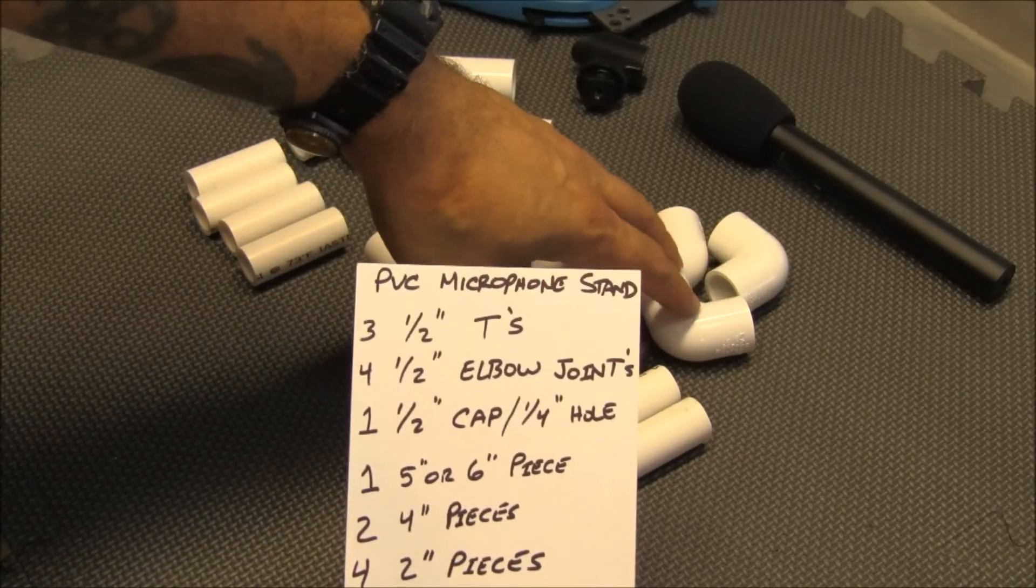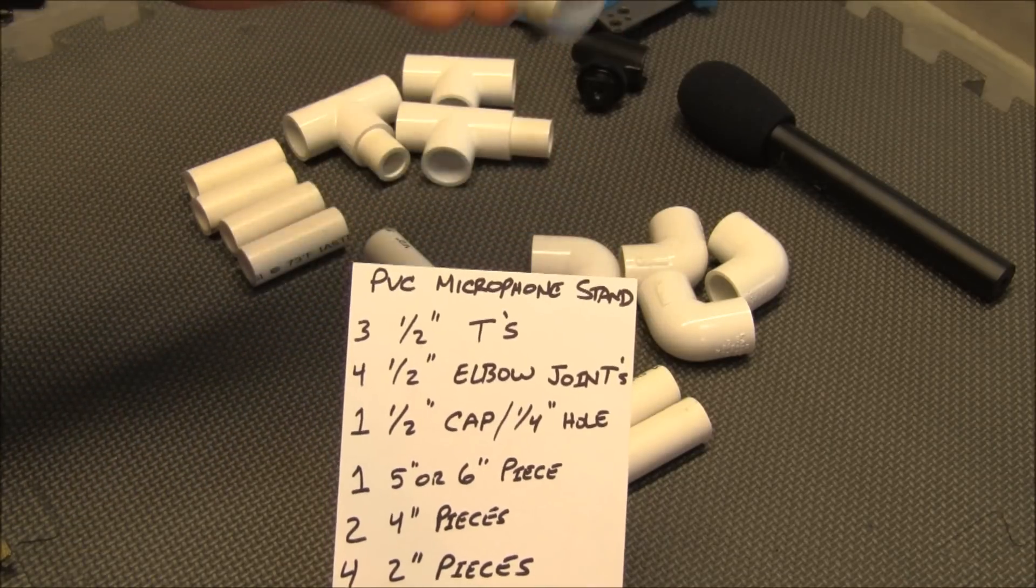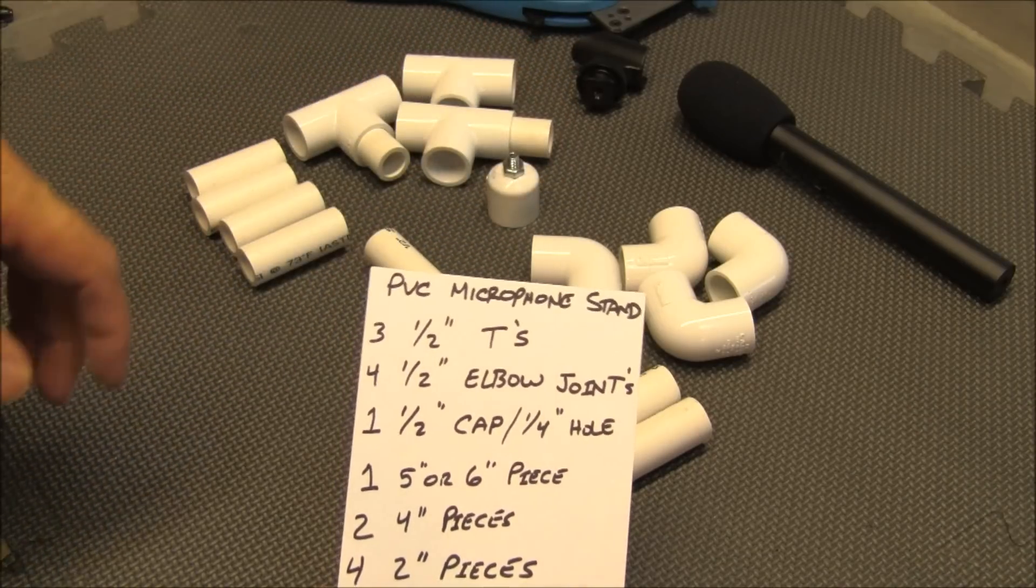You're going to need four 1.5 inch PVC elbows, you're going to need one 1.5 inch cap, you're going to put a 1/4 inch hole in that and put a bolt through it. You can figure that out, pretty easy.